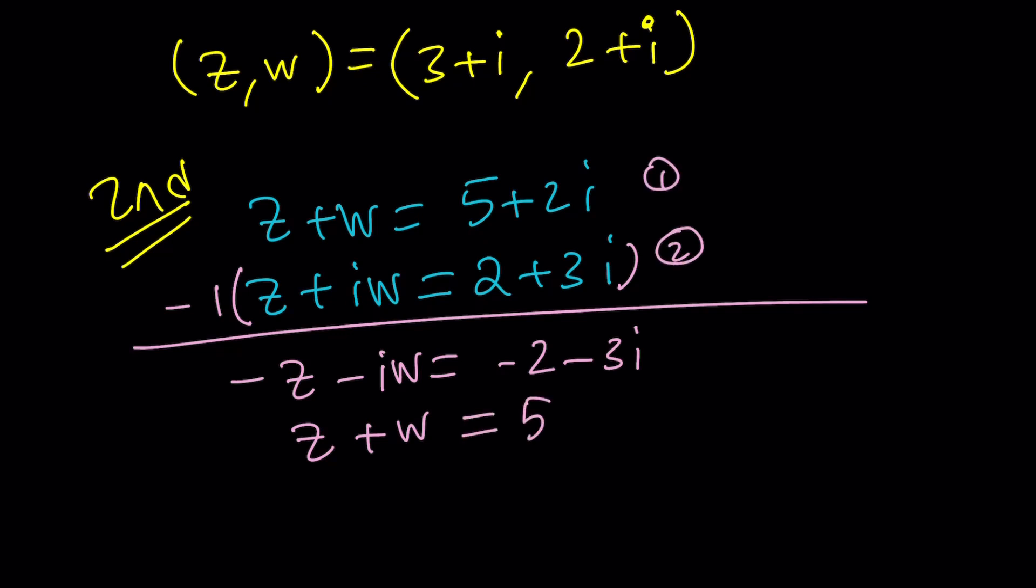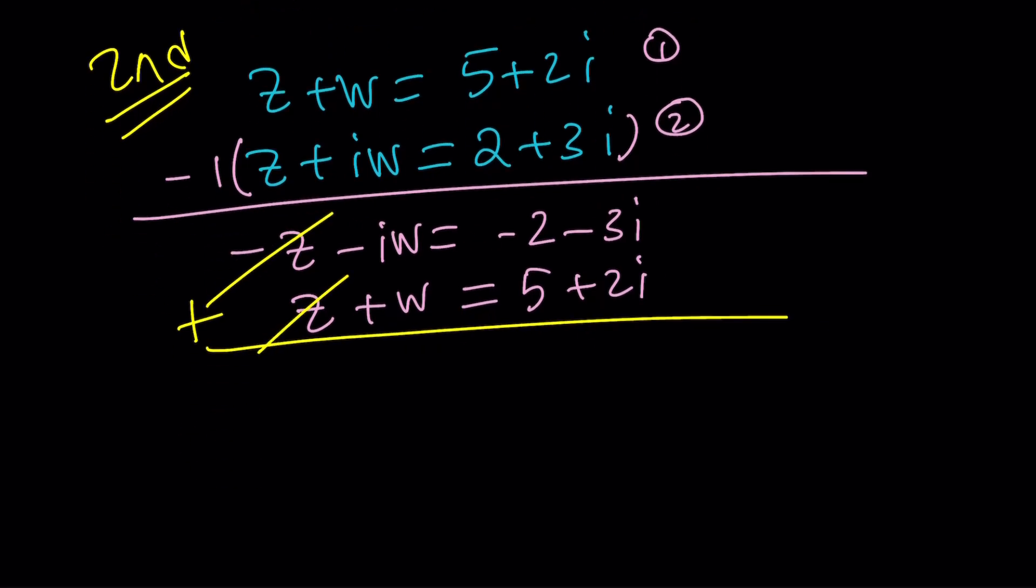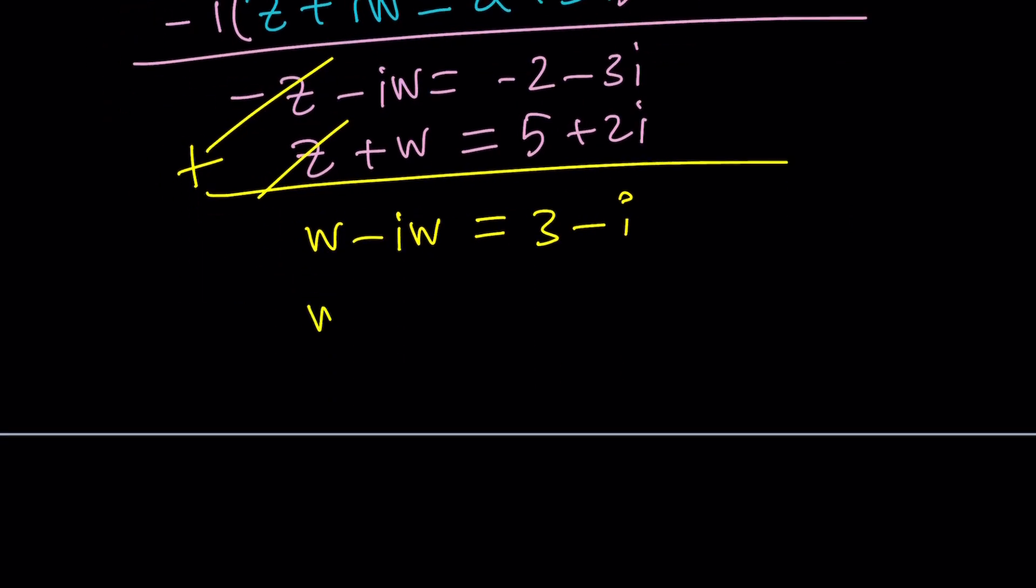And then the first equation stays the same. z plus w is 5 plus 2i. Now when you add these two equations notice that z cancels out nicely. And we end up with w minus iw equals 3 minus i. Awesome. Now we are going to be able to solve for w. Let's go ahead and factor. Take out a w, a common factor. 1 minus i equals 3 minus i.